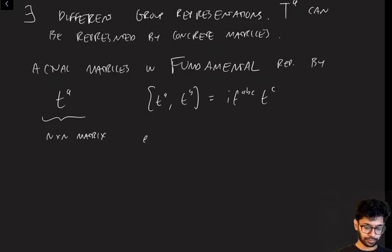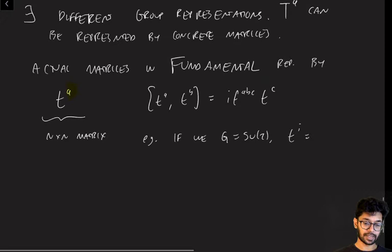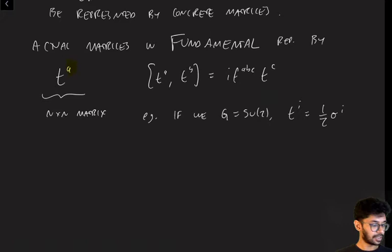For example, if we had G = SU(2), then A runs from 1 to 3, and each of these three matrices is in fact one of the Pauli matrices divided by a factor of 2.